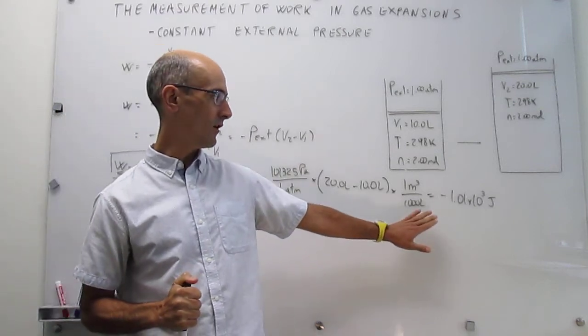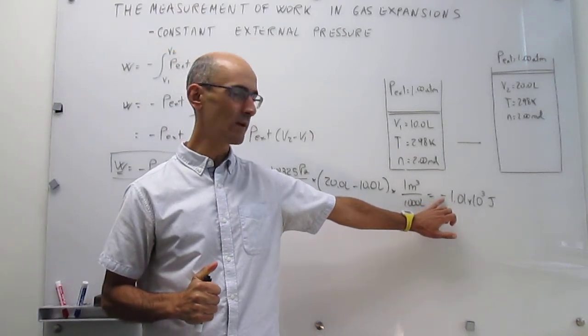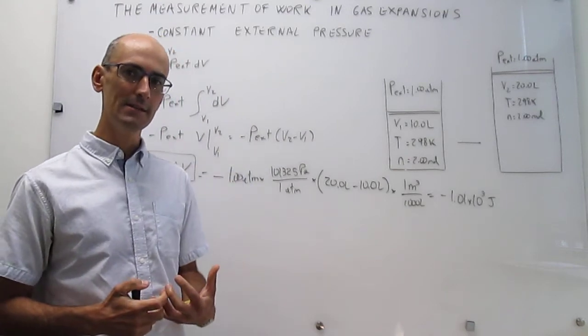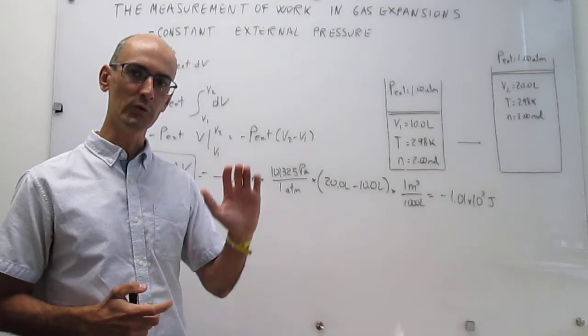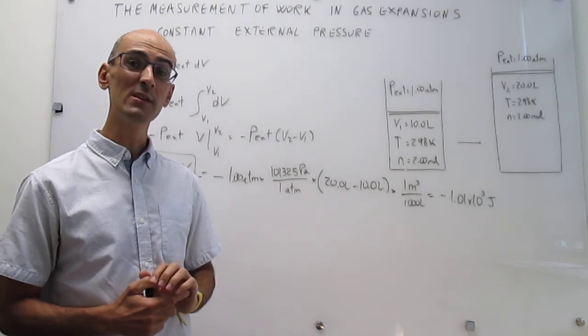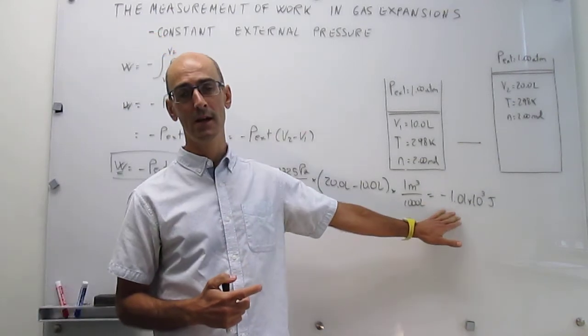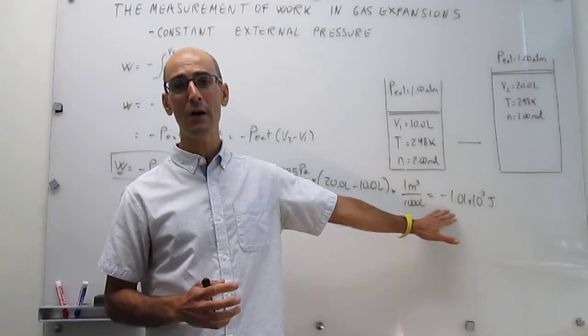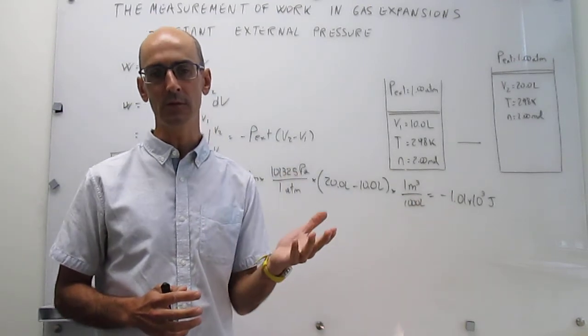And from the definition of work in chemistry and the life sciences, there is a negative sign, and that signifies that it's the system that is doing work on the surroundings, and the system is losing energy. It's transferring, or this process transfers 1,000 joules out of the system into the surroundings.